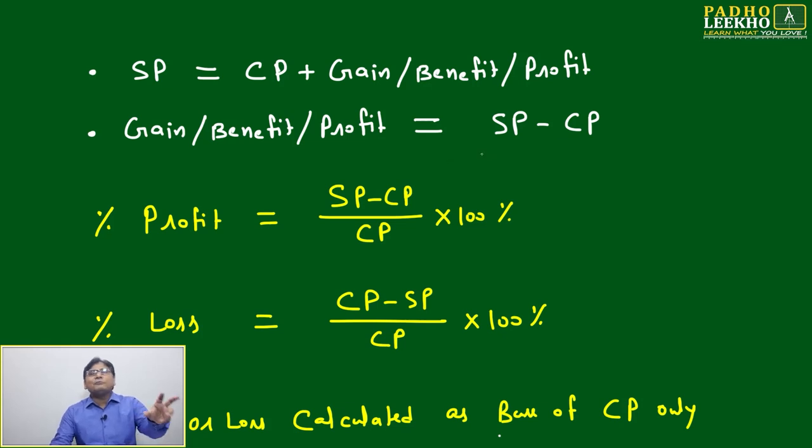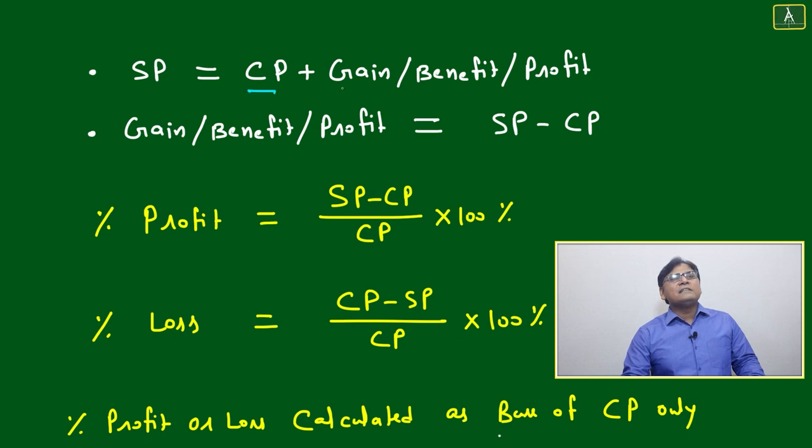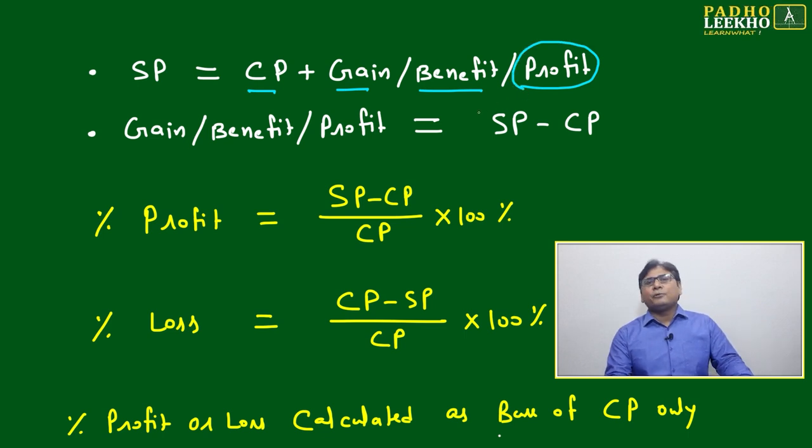Now this same thing, whatever we understood, these three or four terminologies, we'll write in simple math. Selling price equals cost price plus whatever gain, whatever benefit you got. The exact terminology in math you can say it is profit. Then cost price plus profit will be equal to your selling price. Then what is your profit? Difference between selling price and cost price.